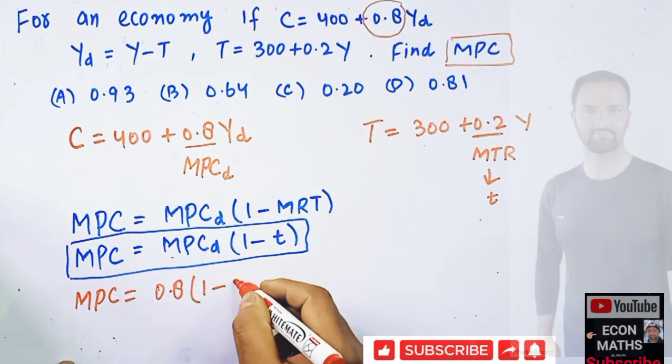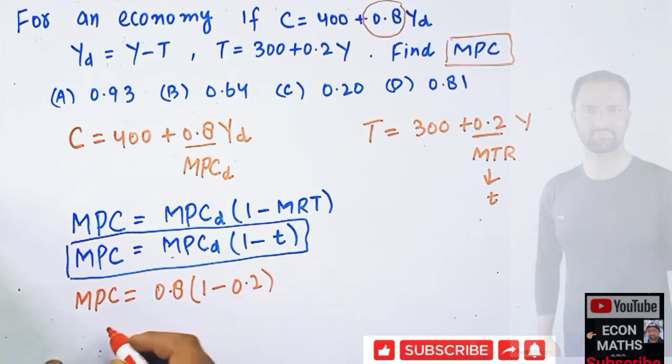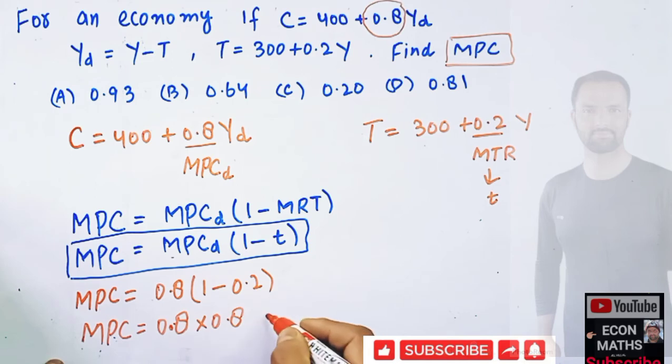We have 1 minus what is our tax rate - tax rate is being given as 0.2. So MPC equals 0.8 times (1 minus 0.2) equals 0.8 times 0.8, which comes out to be 0.64.